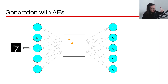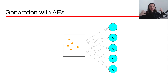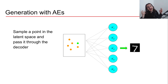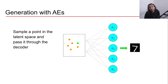We can add more data samples, and each one will be represented by a point in the bottleneck. Once all our data is represented in the bottleneck, we can sample a point in the latent space and pass it through the decoder — hopefully generating a new piece of data never seen before. That's the high-level overview of how we generate with autoencoders. For more detail, check the previous video in this series.